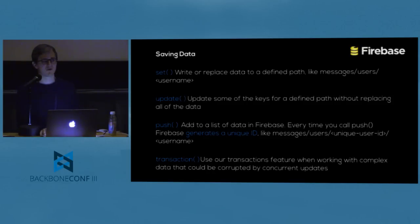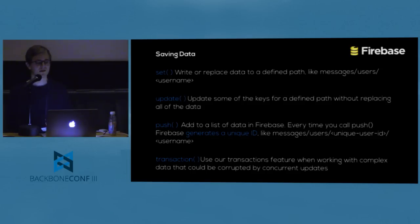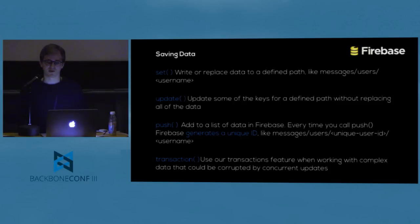To describe the Firebase API: you have set, which writes or replaces data to a defined path. Update simply merges what you pass to the location. Push is different — it automatically creates client-side unique IDs, instantly, in such a way that your data is ordered. As long as you use push, when you retrieve your data later it will be ordered, regardless of which client is connected.